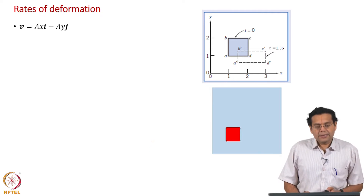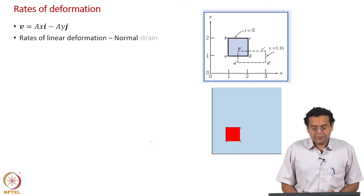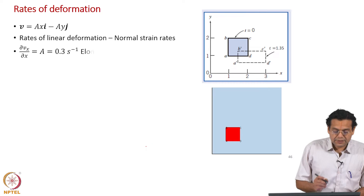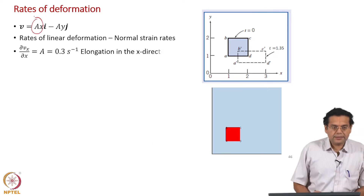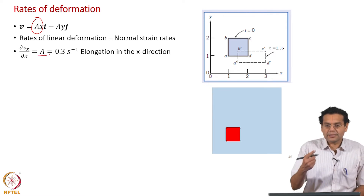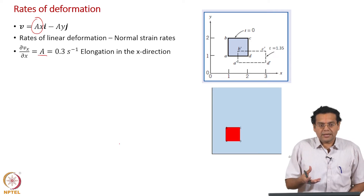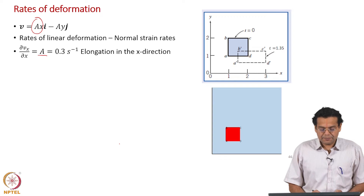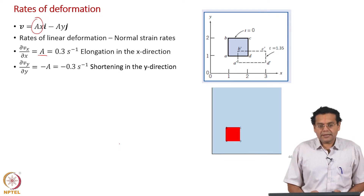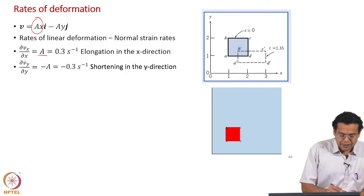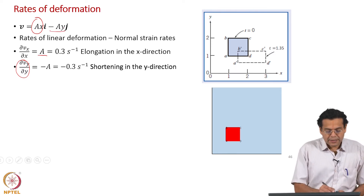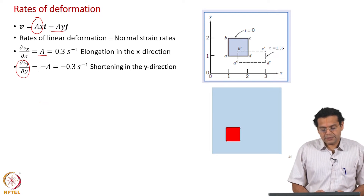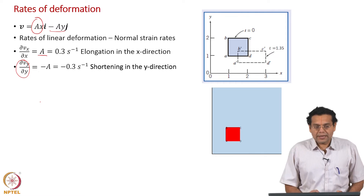The velocity field is given by v = ax·i - ay·j. Let us calculate the normal strain rates. The rate of linear deformation ∂v_x/∂x = a. For this velocity field the x-component depends on x, so differentiating gives a nonzero value — unlike the earlier example. Whenever the x-component depends on the x-coordinate, there is a nonzero normal strain rate. The value is 0.3 s⁻¹, meaning elongation in the x-direction. The normal strain rate in the y-direction, ∂v_y/∂y = -a = -0.3 s⁻¹, meaning shortening in the y-direction.